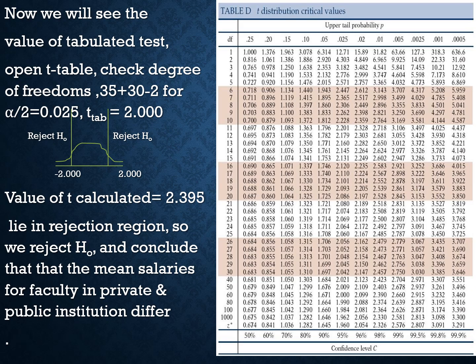Now we find the tabulated t value. We open the t-table and check the degree of freedom for alpha divided by 2 equals 0.025. The degree of freedom is n1 plus n2 minus 2, which is 35 plus 30 minus 2 equals 63.